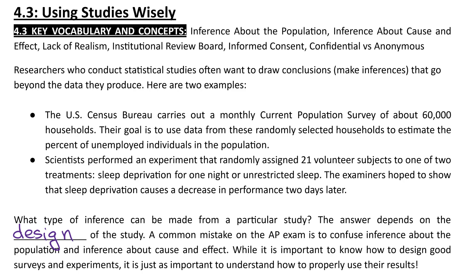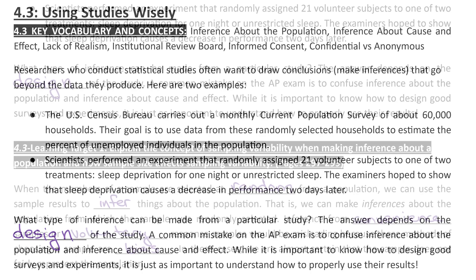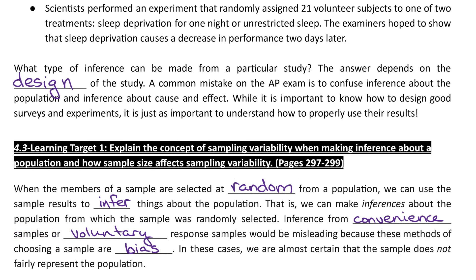The answer depends on the design of the study. A common mistake in AP Stats is to confuse inference for a population with inference about cause and effect. If you randomly select members from a population, your sample results will be able to infer things about that population. But inference from convenience samples or voluntary response samples would be misleading — these sampling methods are biased, and in these cases we are almost certain that the samples do not fairly represent the population we're trying to study.